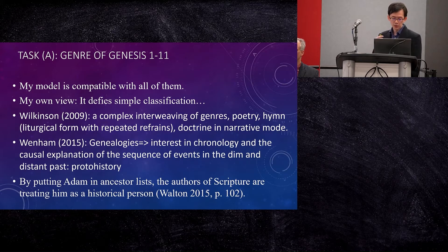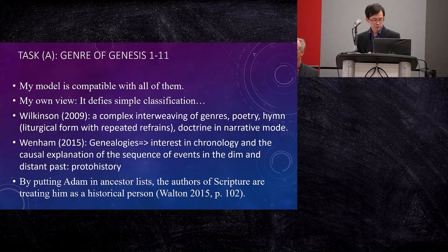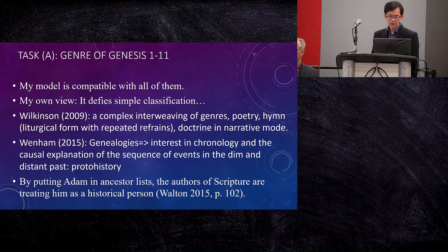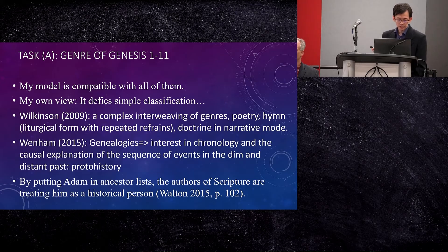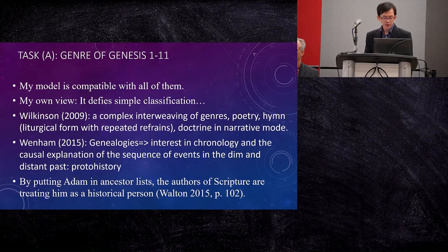I see a complex interweaving of genres, which include poetry, hymn, and doctrine in narrative mode. I also see an interest in chronology, which can be seen from the genealogies — a causal explanation of the sequence of events in the dim and distant past. In that sense, you can call it proto-history. The biblical authors put Adam in the ancestor lists, and these indicate that the biblical authors are treating Adam as a historical person.